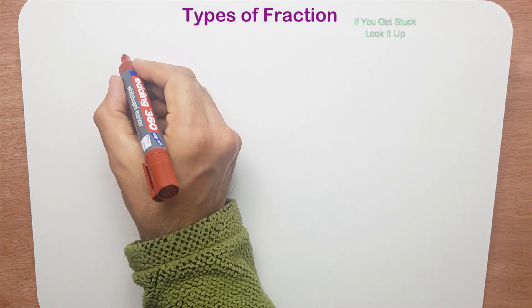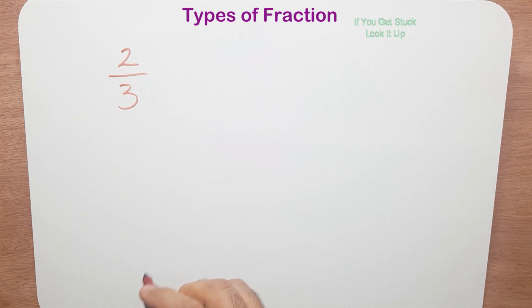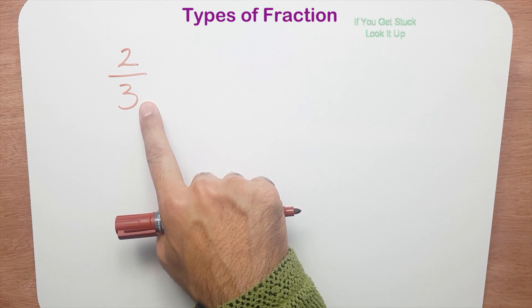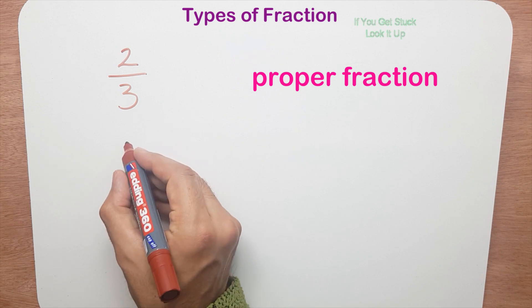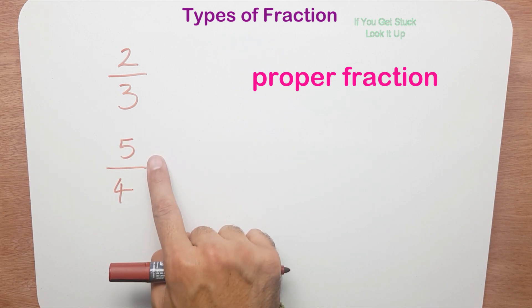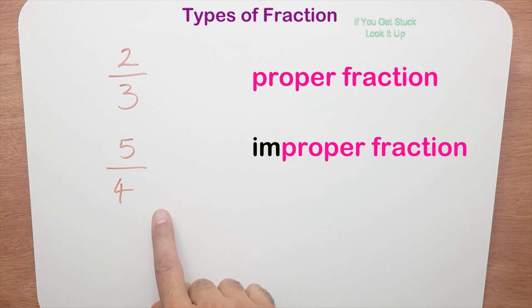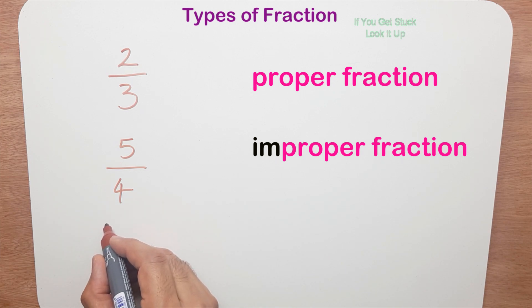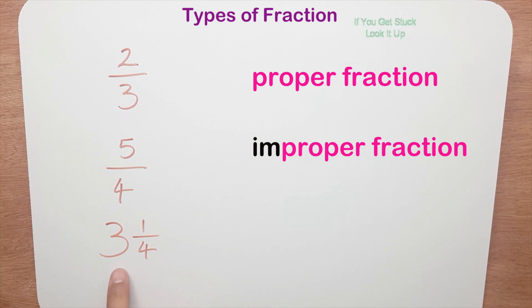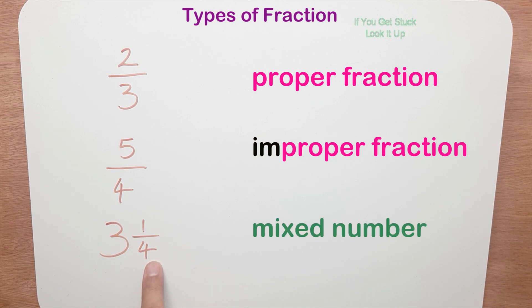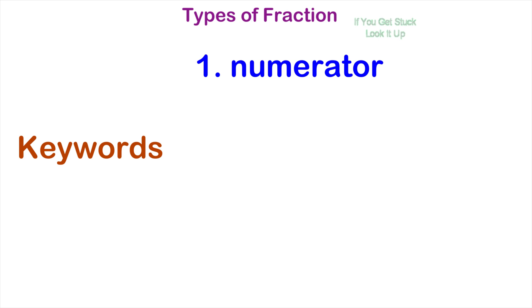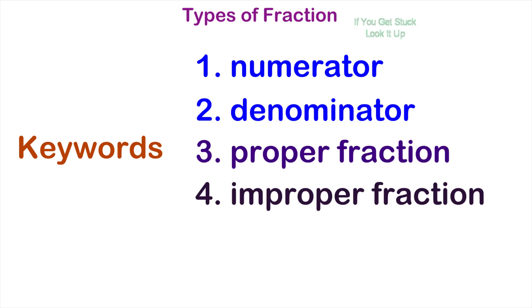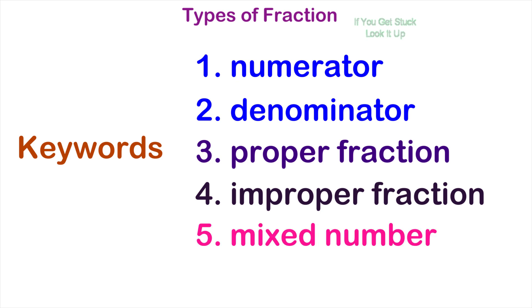To finish off: a fraction where the numerator is smaller than the denominator is called a proper fraction. If the numerator is bigger than the denominator, it's called an improper fraction. And a number like three and a quarter — where you have a whole part and a fraction part — is called a mixed number. The key words are: numerator, denominator, proper fraction, improper fraction, and mixed number. Now see if you can answer some of the questions that follow, and that's it for this lesson.